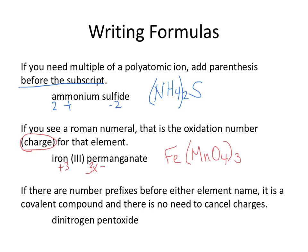If there are number prefixes before either element name, it's a covalent compound. You don't have to bother with canceling the charges — the number prefixes will do it for you. So dinitrogen means 2 nitrogens, pentoxide means 5 oxygens, so that's N₂O₅.